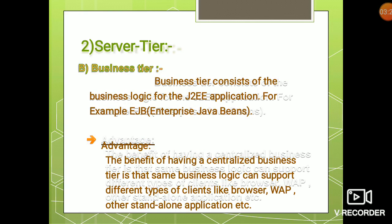Business tier consists of the business logic for the J2EE application, for example, enterprise Java beans. The advantage of having a centralized business tier is that the same business logic can support different types of clients like browsers, web, and other standalone applications. In other words, having a centralized business tier means a user can interact with your application from any different screen sizes, whether using a browser, web, or any other standalone PC.